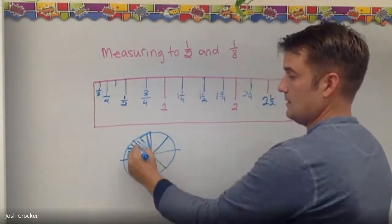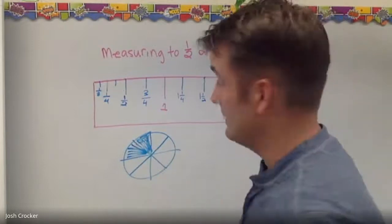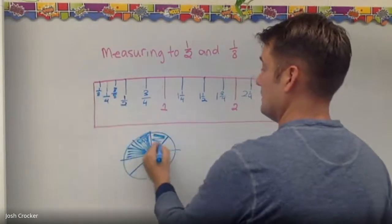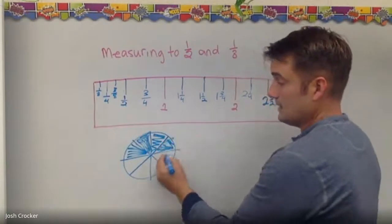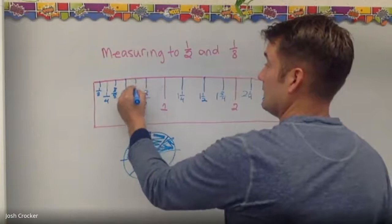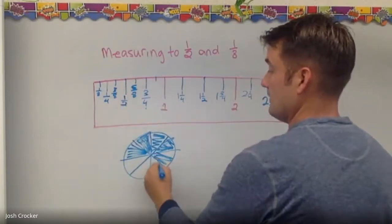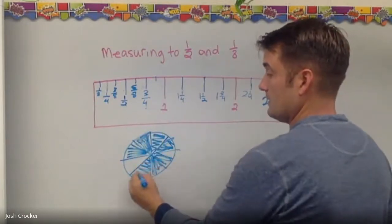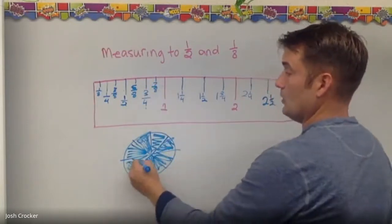Two eighths. Well, two eighths is really the same as having a fourth. Okay. Two eighths. Three eighths. Four eighths. Four eighths is the same as a half. Okay. Five eighths. Six eighths. So five eighths. Six eighths is the same as three quarters. And then seven eighths. And then seven eighths. And then we get to the whole, which is one.